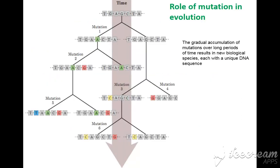Regarding the role of mutation in evolution: with the passage of time, mutations occur in genetic material which drive evolution. Parent and progeny DNA differ due to mutations, depositing new traits into the DNA. This process took several billion years because the genetic material is very conserved.